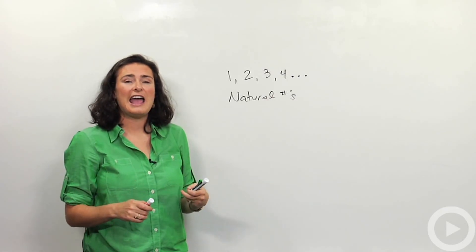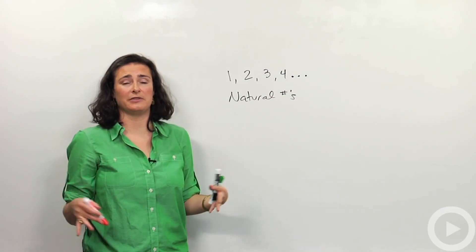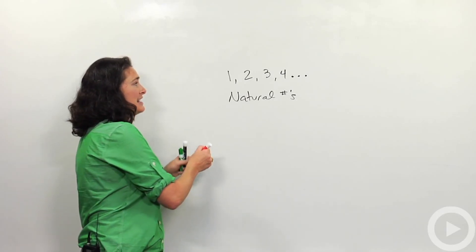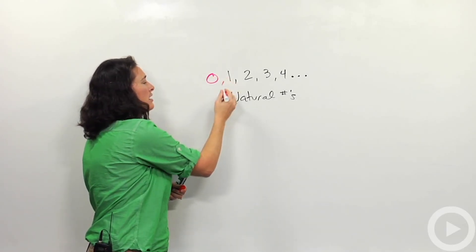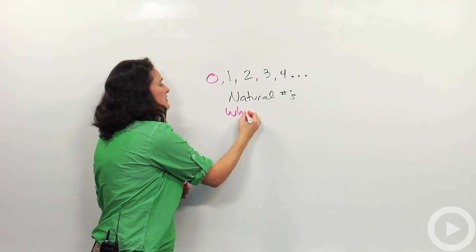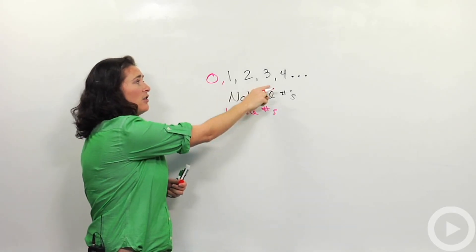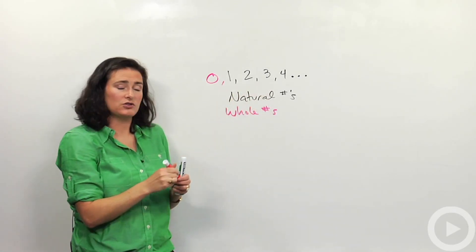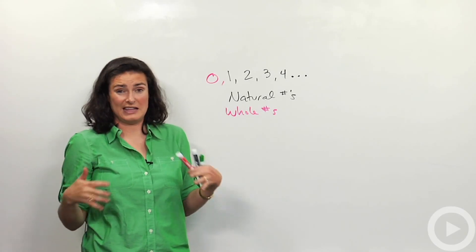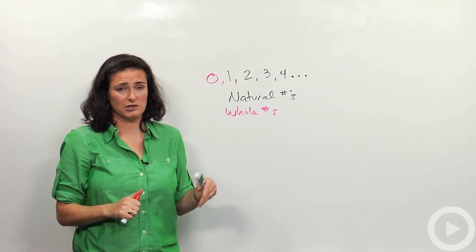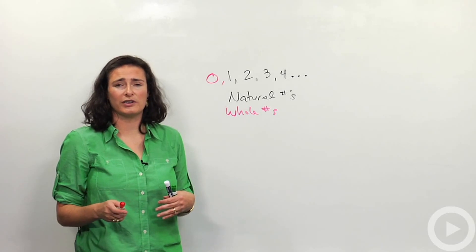If I add more numbers, I have what's called a different family or a different set of numbers. If I add a zero in here, just adding that zero is now called the whole numbers. If I have black only, that's the natural numbers. If I put in the zero, that's now called the whole numbers — zero, one, two, three, four, and on and on and on.